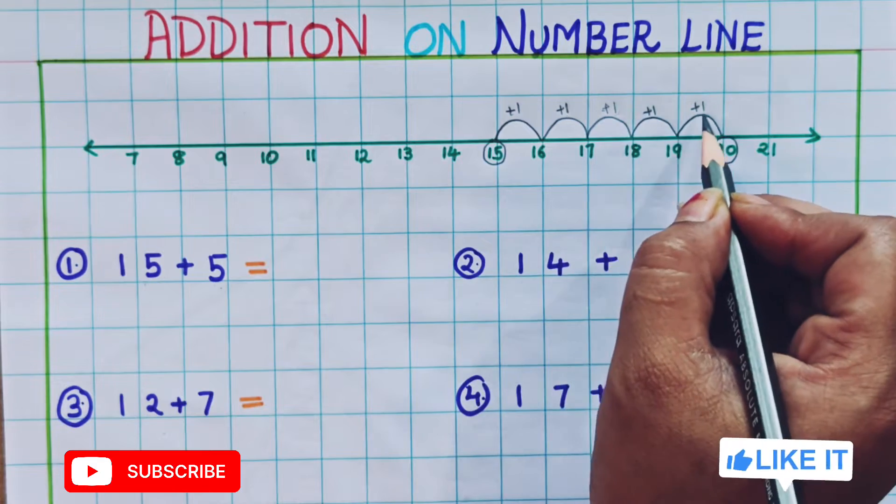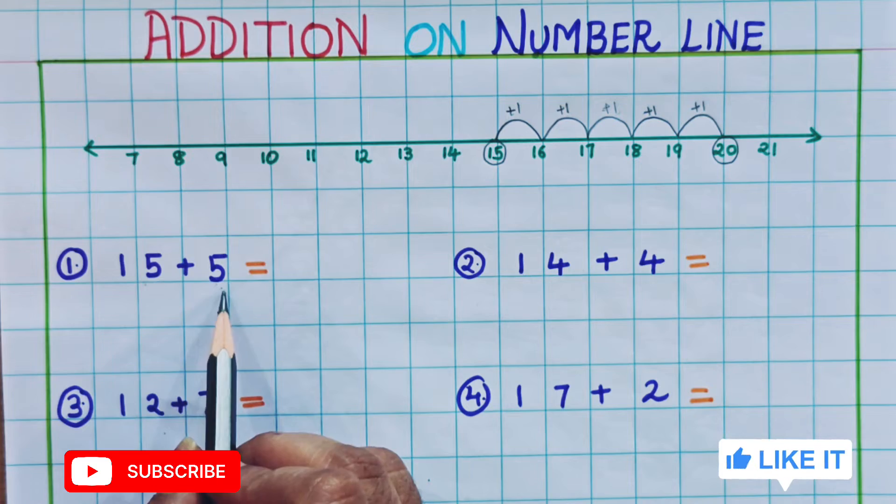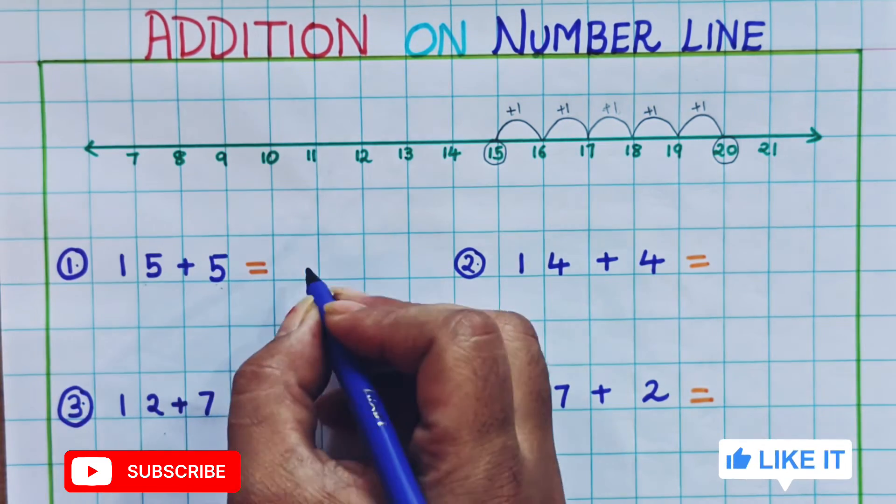See 1, 2, 3, 4, 5. 5 numbers I have added. So which number am I getting? 20. So what is 15 plus 5? It is 20.